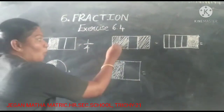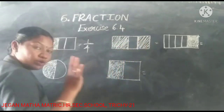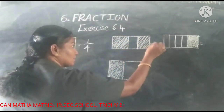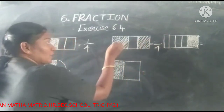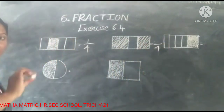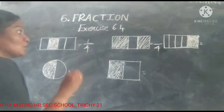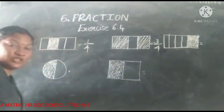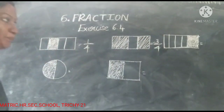Next one — one, two, three, four. Totally four equal parts. Three parts are shaded — three-fourths. The fraction of the picture is three-fourths.